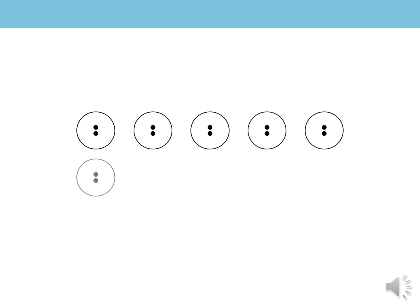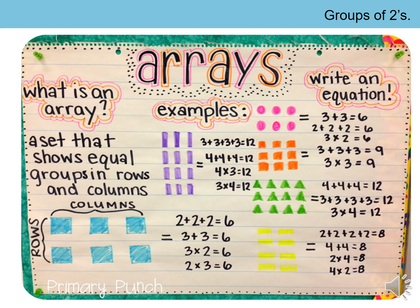And like I said, this is called an array. And arrays help us because arrays will help us, first of all, see how many there are in total. They'll help us work out how many groups there are and then we can work out the total. And this will help me write equations.